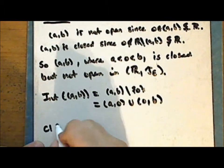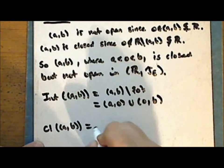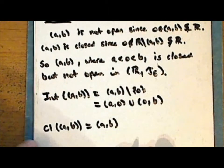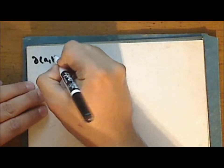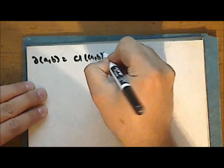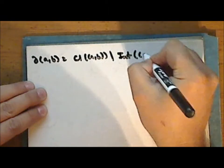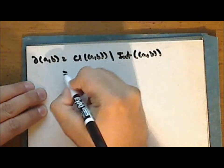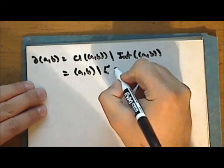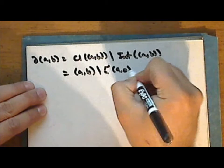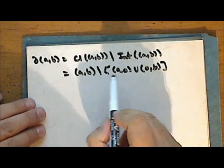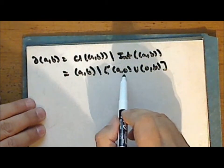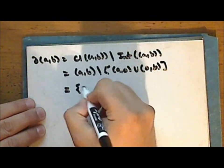The closure of the interval from a to b is the interval from a to b, as it is a closed set — it is its own closure. So now we can calculate the boundary. The boundary is the closure set minus the interior, which is the entire interval set minus the union of the points between a and zero with the points between zero and b. So we are removing all points from the interval except for the number zero, and so the boundary is the singleton set containing zero.